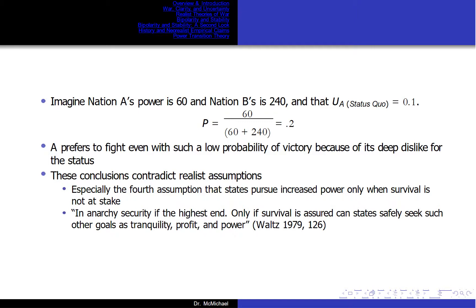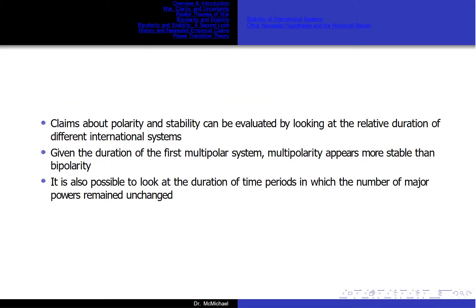Taking the quote from Waltz: 'In anarchy, security is the highest end. Only if survival is assured can states safely seek such other goals as tranquility, profit, and power.' Claims about polarity and stability can be evaluated by looking at the relative duration of different international systems. The modern international system began in 1648 and was multipolar until 1945, which is 247 years. It was bipolar from 1945 to 1989, which is 44 years. It has been unipolar from 1989 to the present. Given the duration of the first multipolar system, multipolarity appears more stable than bipolarity.